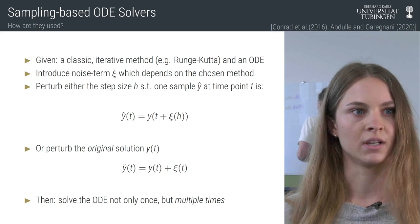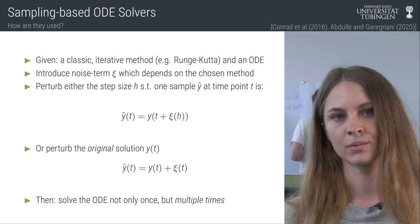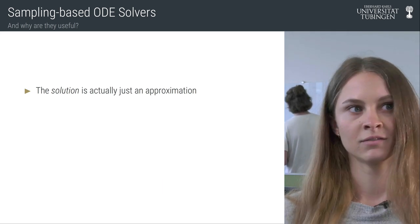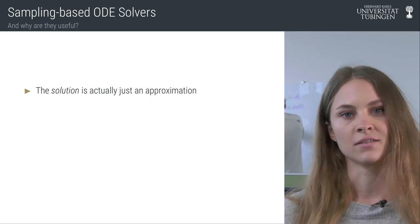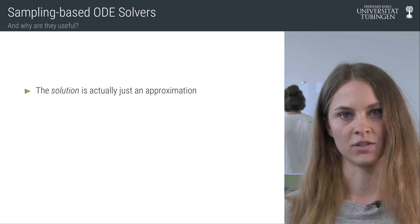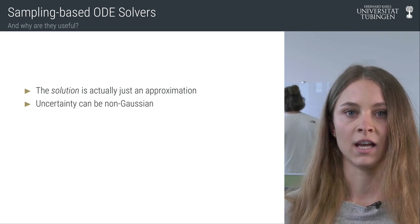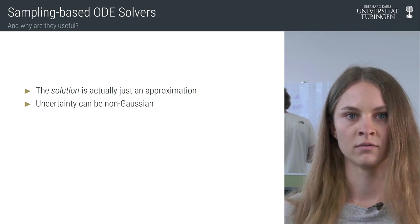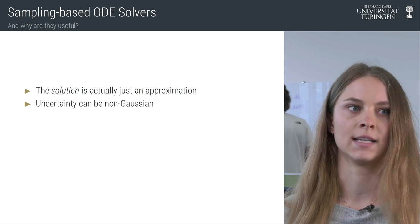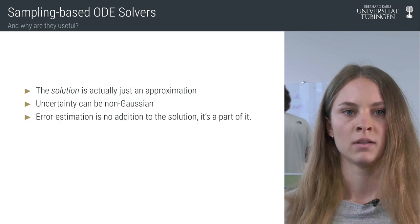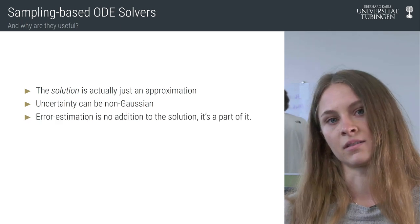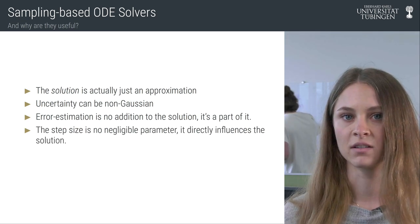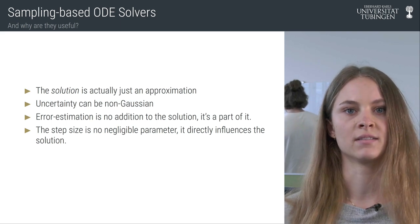How do we achieve a solution to the ODE? We solve the ODE not only once but multiple times. The solution — or what we call the solution — is actually just an approximation to the true solution of the ODE. Those uncertainties can also be non-Gaussian, which is something filter-based methods can't take into account. The error estimation is not just an addition to the solution but can also be a part of it, and the step size directly influences the solution.